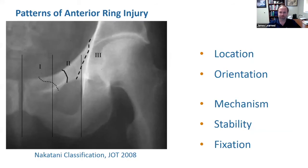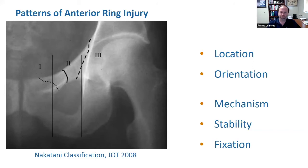This is the Nakatani classification, which looks at regions based on the obturator foramen: medial is zone 1, at the obturator foramen is zone 2, and lateral is zone 3. That location and orientation affects both the likelihood of displacement and how easy fixation will be. Lower energy versus higher energy injuries have different intrinsic stability. So it's important to think not just about whether there is a ramus fracture, but exactly where and how it's oriented, to help plan fixation.